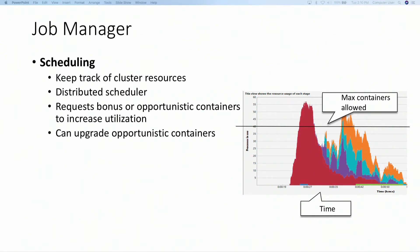The job manager also uses spare capacity in the cluster — opportunistic containers from YARN RM — to execute the DAG, since clusters are not always fully utilized. On a graph showing resource utilization across different stages, the horizontal line shows the limit the job was supposed to run at, but many stages went above that limit by using spare capacity in the form of opportunistic containers from YARN RM.